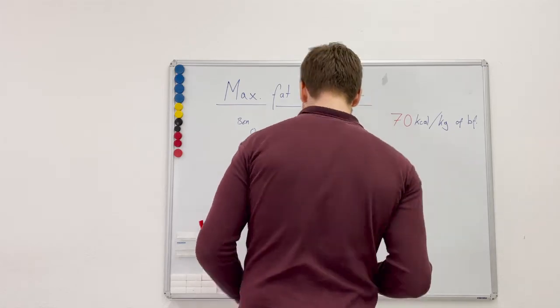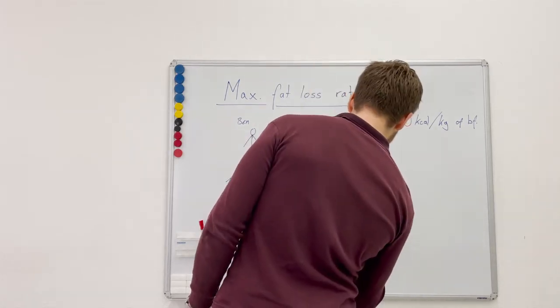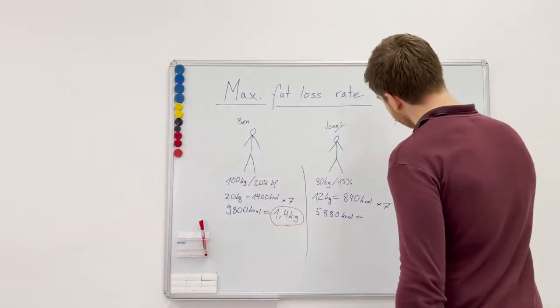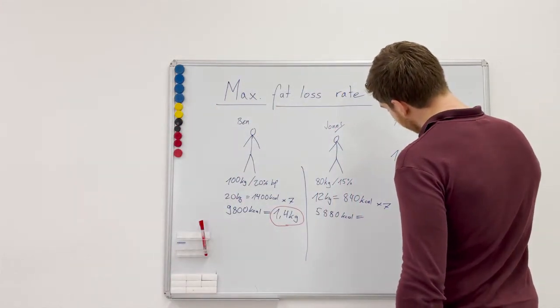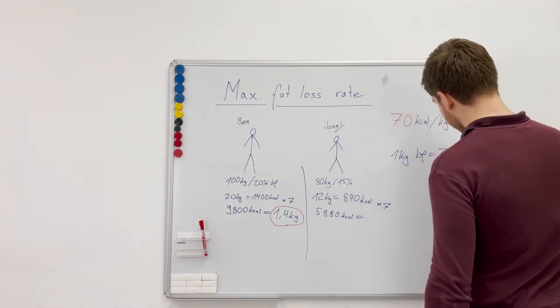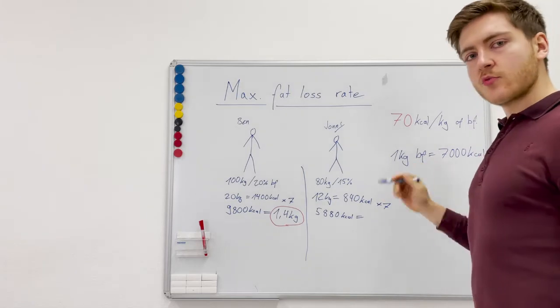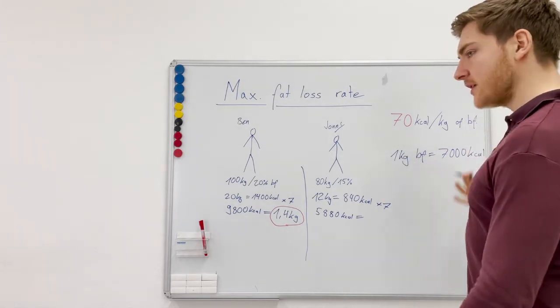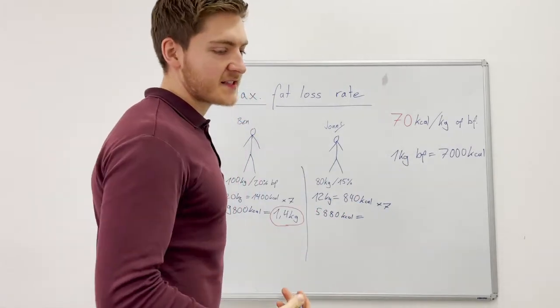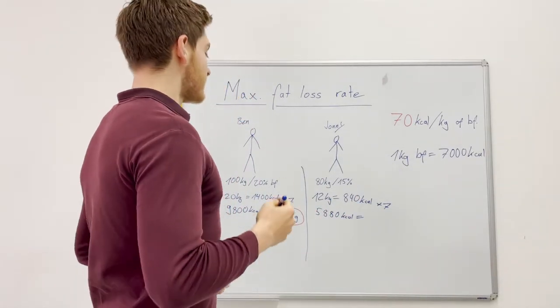This will lead then to a deficit of 5880 calories, and that results then, because we already know, let me write it down: one kilogram of body fat equals 7000 calories. So to lose one kilogram of body fat we need to create a deficit of 7000 calories.